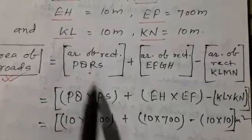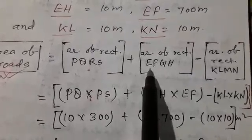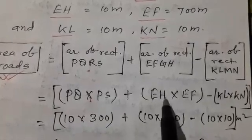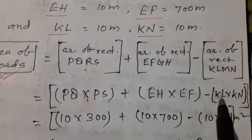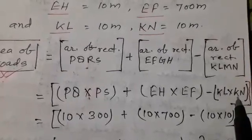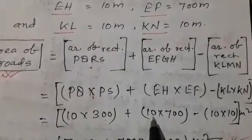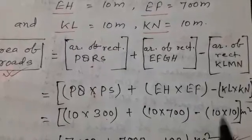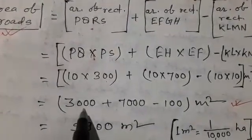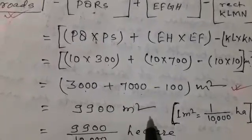PQ multiply PS that is area of PQRS plus area of rectangle EFGH. Multiply length into width, EH multiply EF, minus KL multiply KN. Both are same, it is a square. Now put up the values: 10 multiply 300 plus 10 multiply 700 minus 10 multiply 10 meter square. After solution, we find 3000 plus 7000 minus 100 meter square equals 9900 meter square.